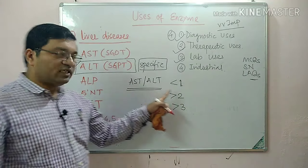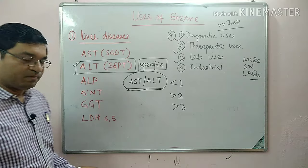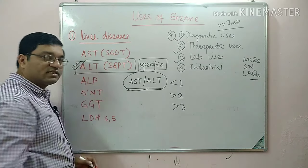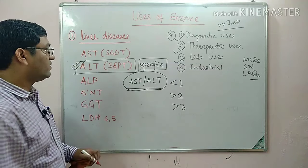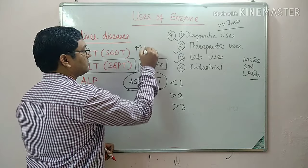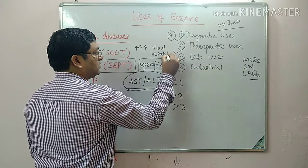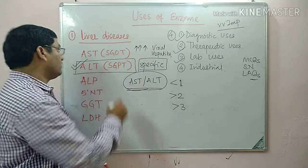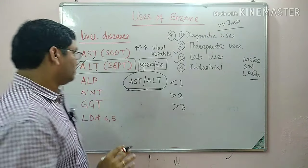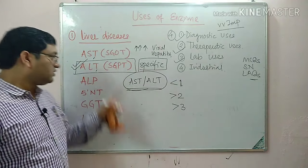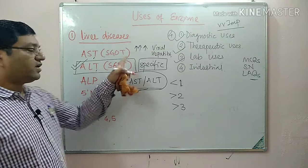There is marked elevation of ALT and AST levels in viral hepatitis. In this condition, the levels of ALT and AST can increase up to 2000, 3000, or 5000 — there is marked elevation in viral hepatitis.